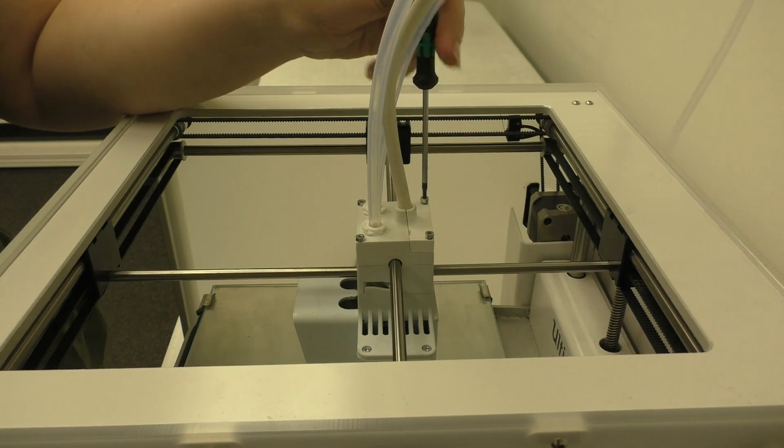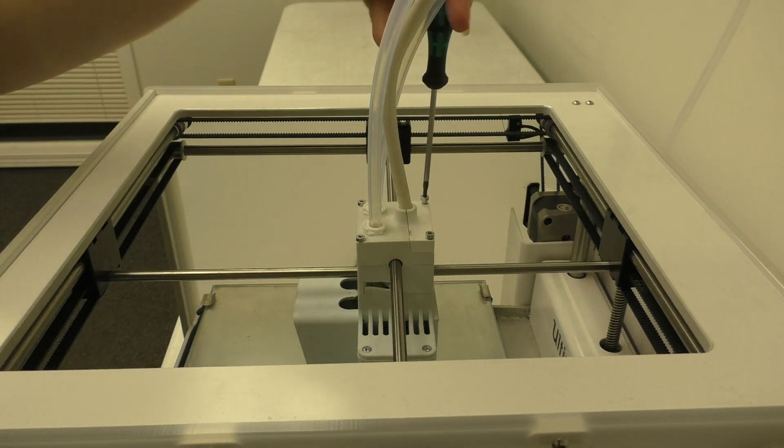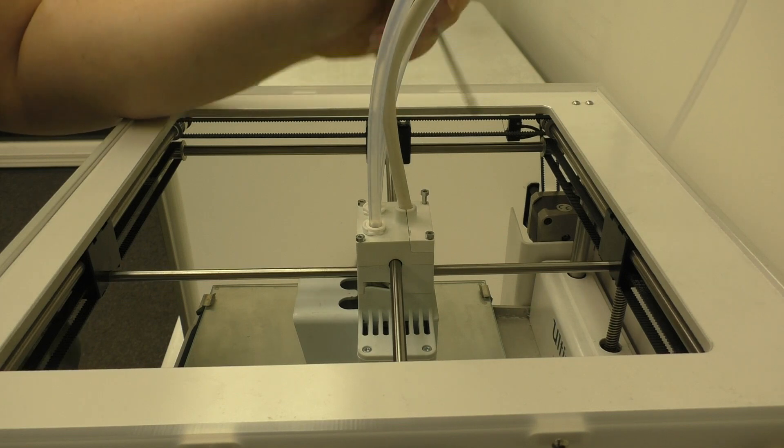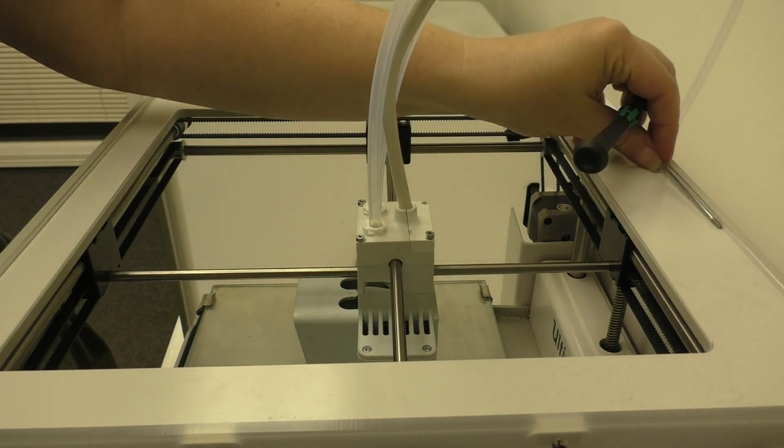We're going to remove the print head from the printer. Now to start, you're going to need to unscrew the two screws at the rear of the print head. We'll go ahead and set these aside.